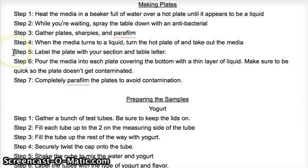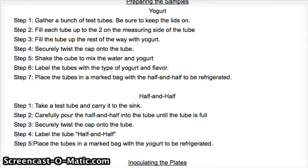You pour the media into each plate, covering the bottom with a thin layer of liquid. You have to make sure the plate doesn't get contaminated, because that would ruin how the bacteria grows. You parafilm it so you can see from the top to take pictures for the experiment. To prepare the yogurt samples, you need test tubes — keep the lid on so it doesn't get contaminated. Fill each tube with yogurt, add some water to water it down, securely twist the cap on, and shake to mix.